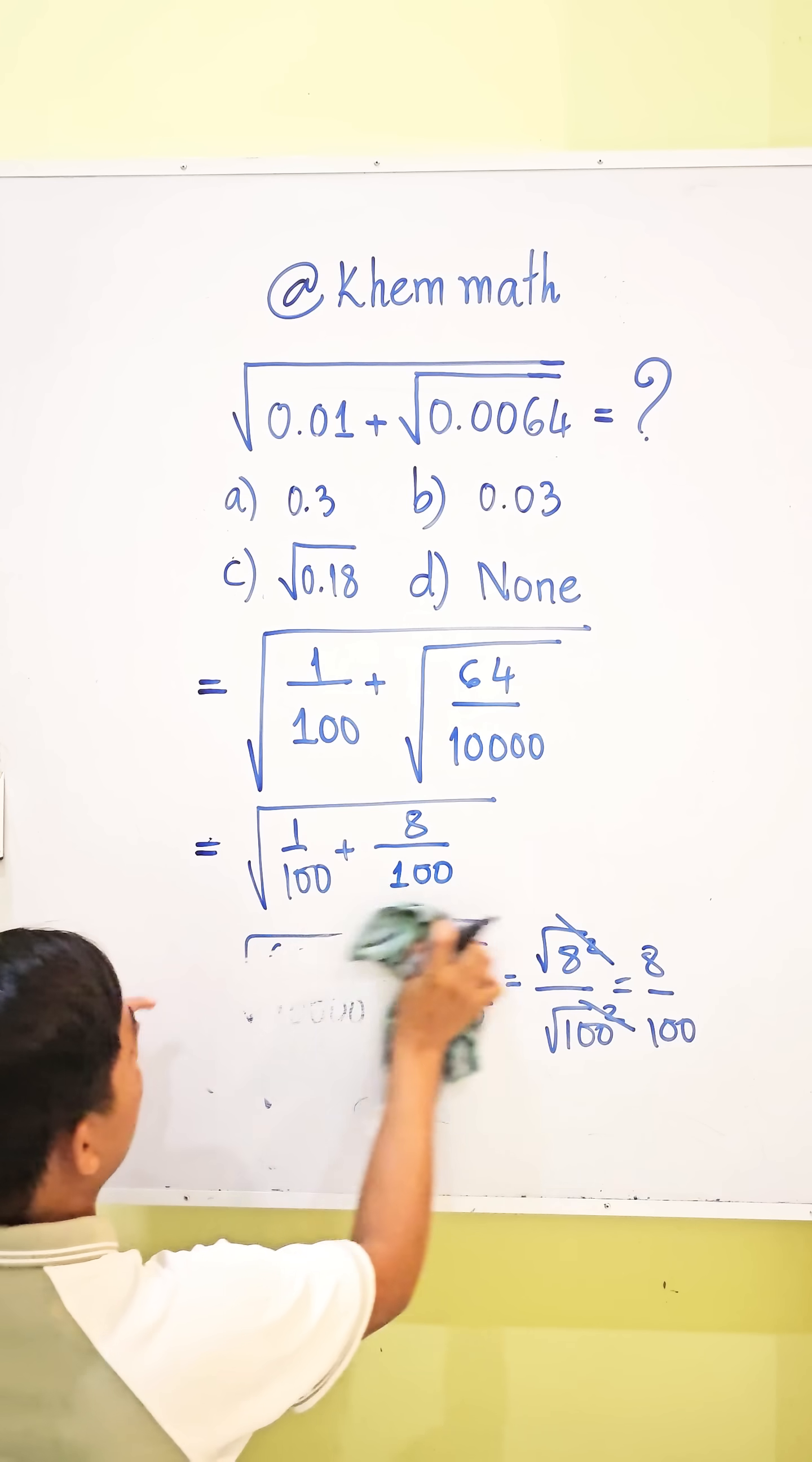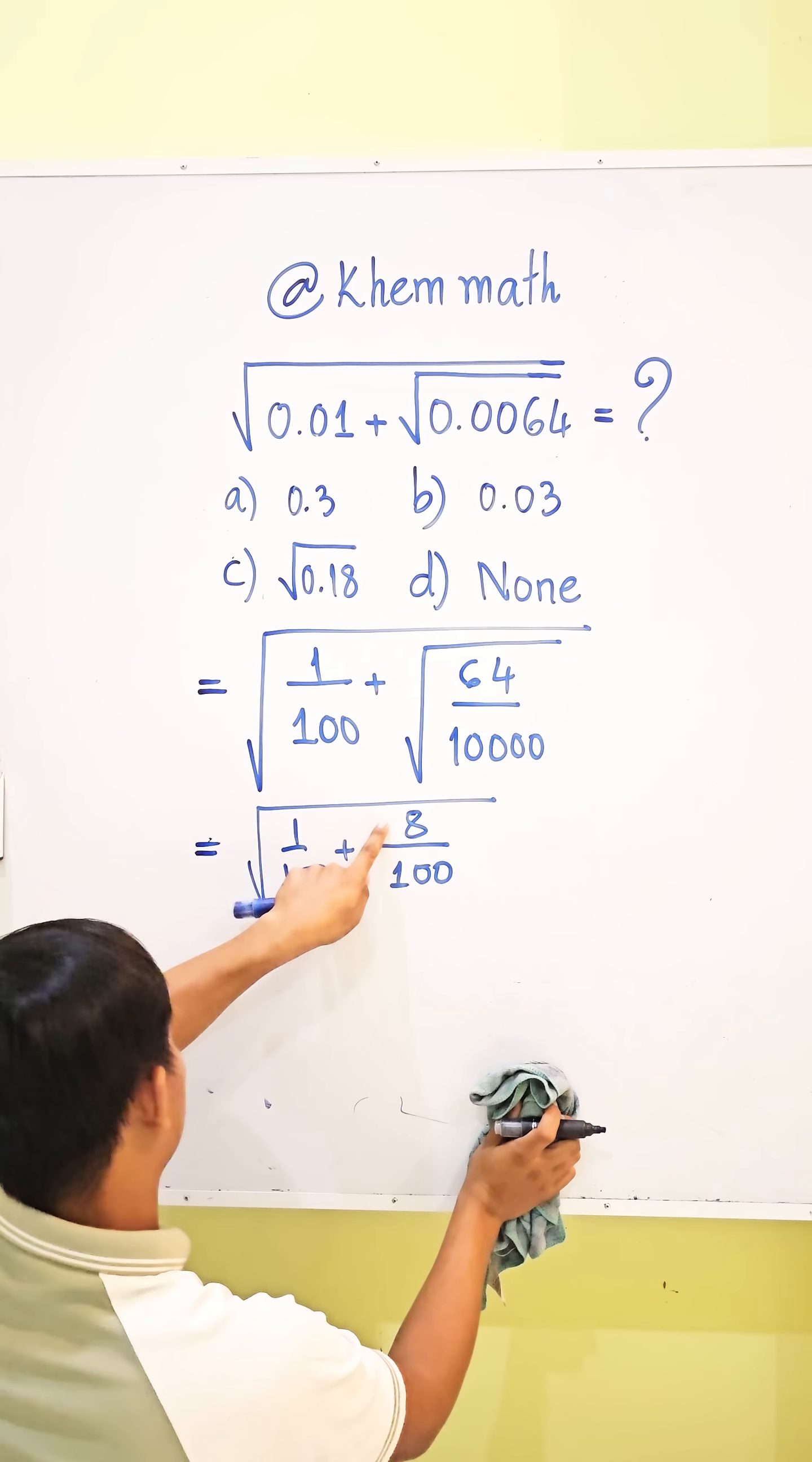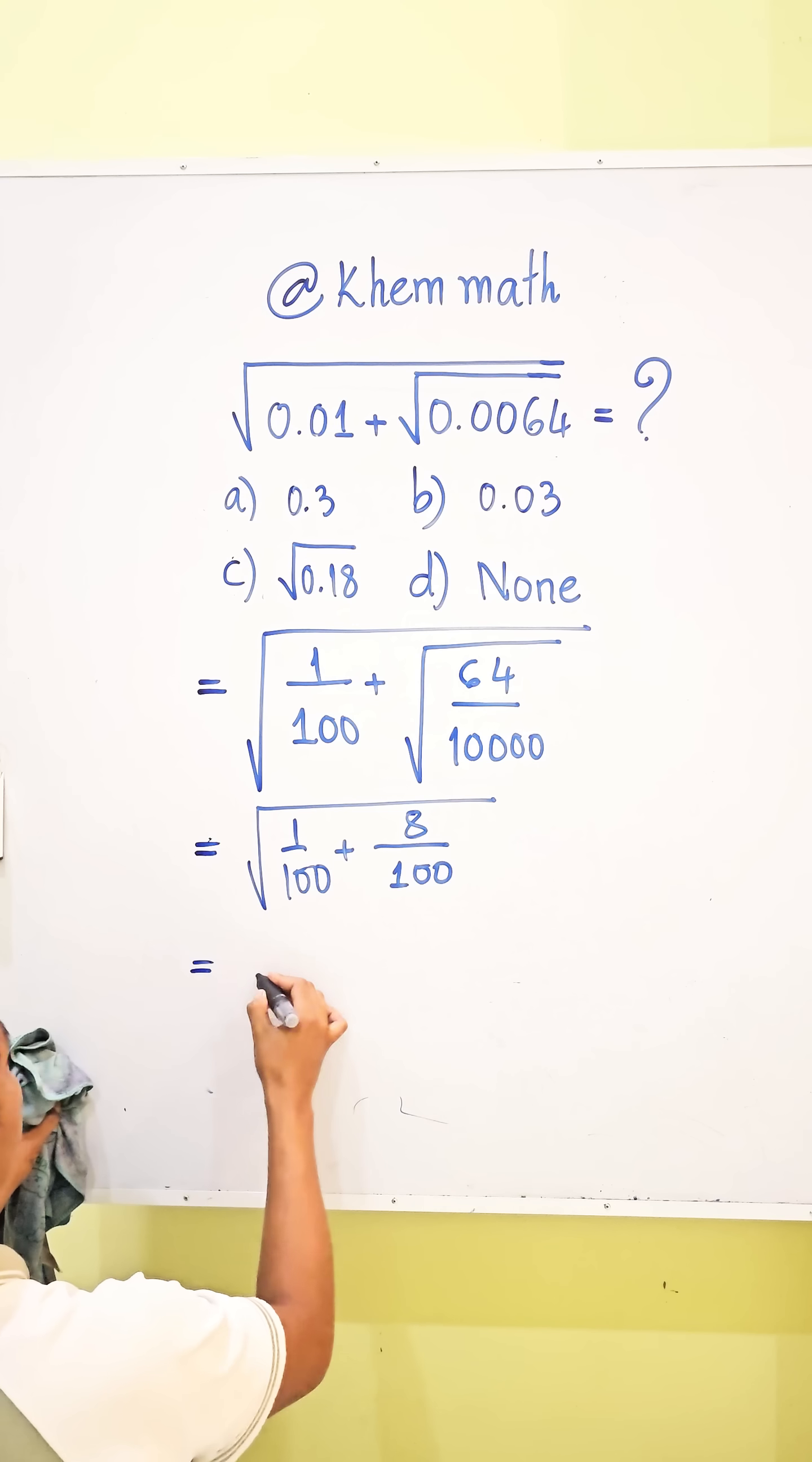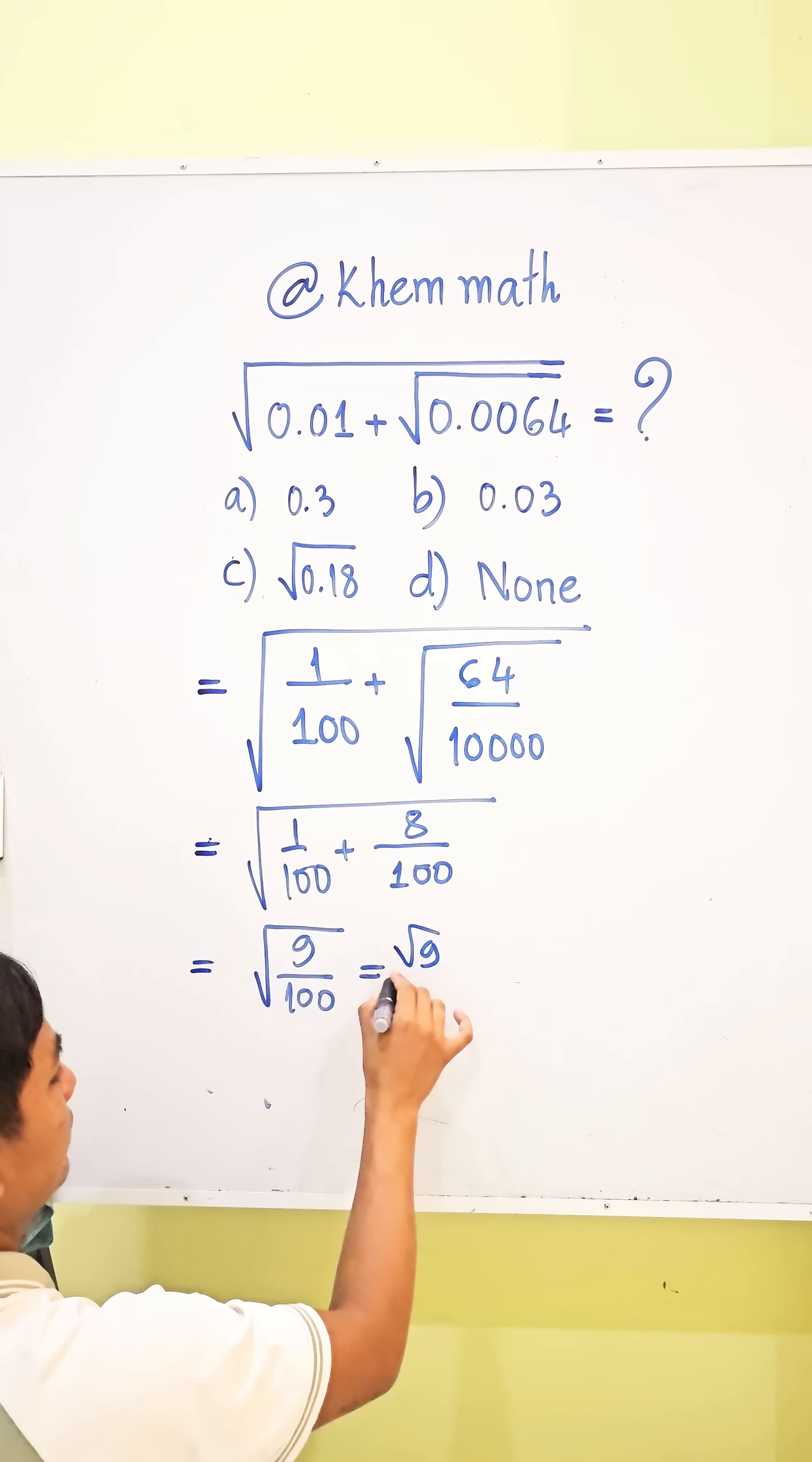Look here, the same denominator—it's 100 and this is 100—so we add the numerators: 1 plus 8 equals 9. We get 9 divided by 100, and it equals square root of 9 divided by square root of 100.